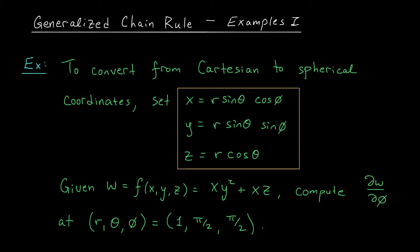You know how in R2 we have a couple different ways of specifying the location of a point? We could use Cartesian coordinates x, y, or we could use polar coordinates rho, phi. Well in R3 we have various choices as well. We could specify the location of a point using Cartesian coordinates x, y, z, or perhaps we could use something called spherical coordinates. This is a coordinate system with three variables r, theta, and phi, and those three variables allow us to specify the location of points in R3.